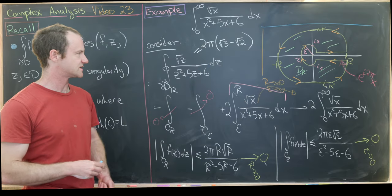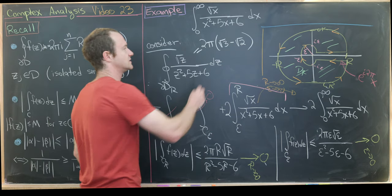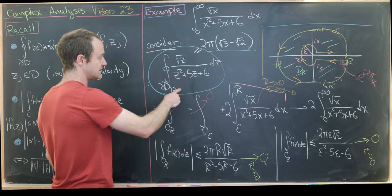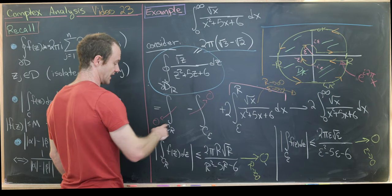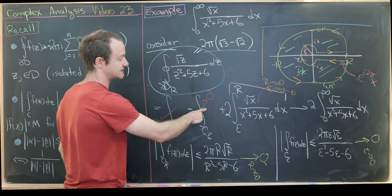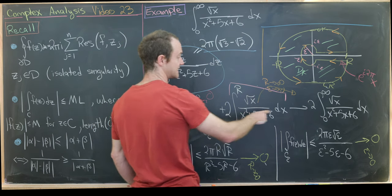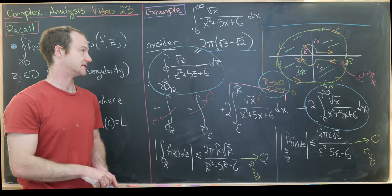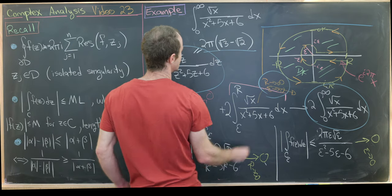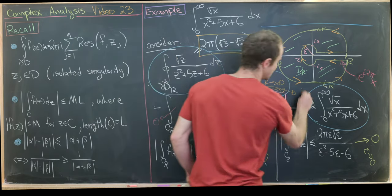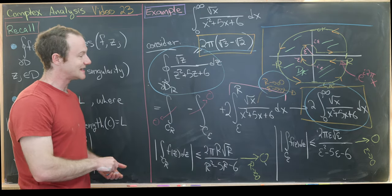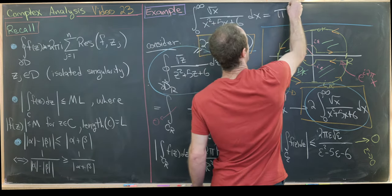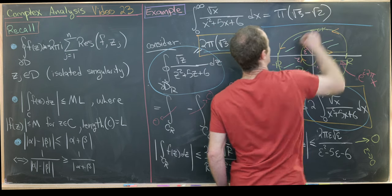Putting it all together: 2π(√3 − √2) equals 2 times our goal integral as R → ∞ and ε → 0 (with the C_R and C_ε terms vanishing). Dividing both sides by 2, the integral from 0 to ∞ of √x / (x² + 5x + 6) dx equals π(√3 − √2).